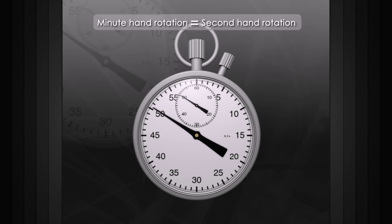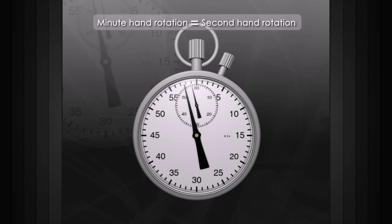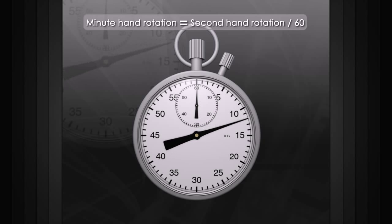We can do this by creating an expression that sets the minute hand's rotation to the second hand's rotation divided by 60. Now, if we rotate the second hand, our minute hand rotates correctly. This saves us a huge hassle of animating it by hand.